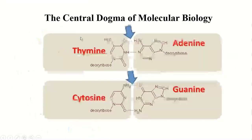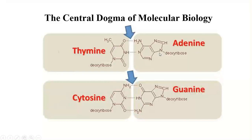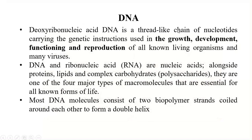There are four bases: thymine, cytosine, adenine, and guanine. Adenine and guanine have two rings (double blocks) and are called purines, while thymine and cytosine have a single ring (single blocks) and are called pyrimidines. DNA — deoxyribonucleic acid — is a chain of nucleotides ATGC that carries the genetic instructions used in the growth, development, functioning, and reproduction of all living organisms, as well as many viruses.